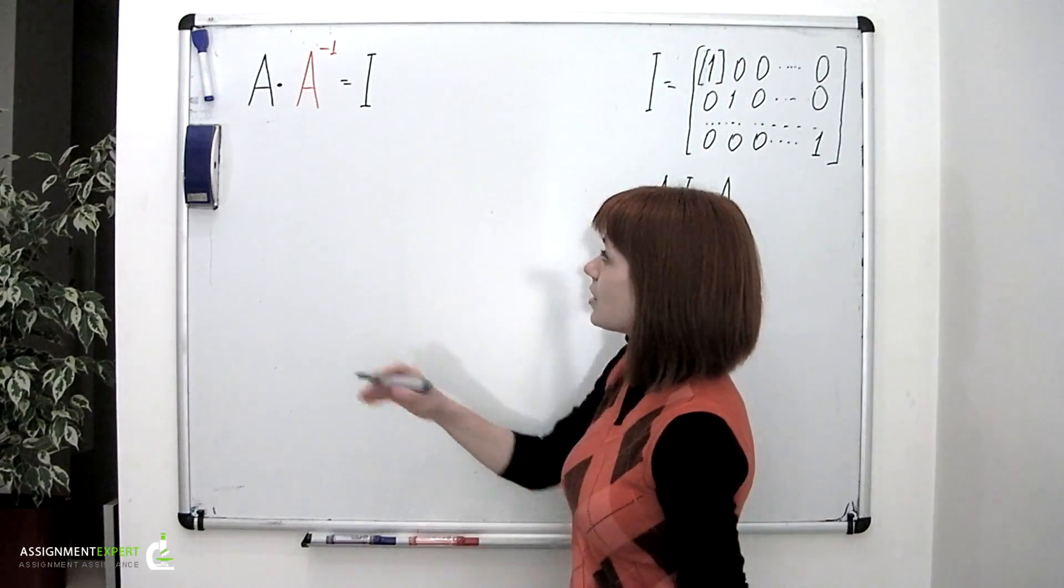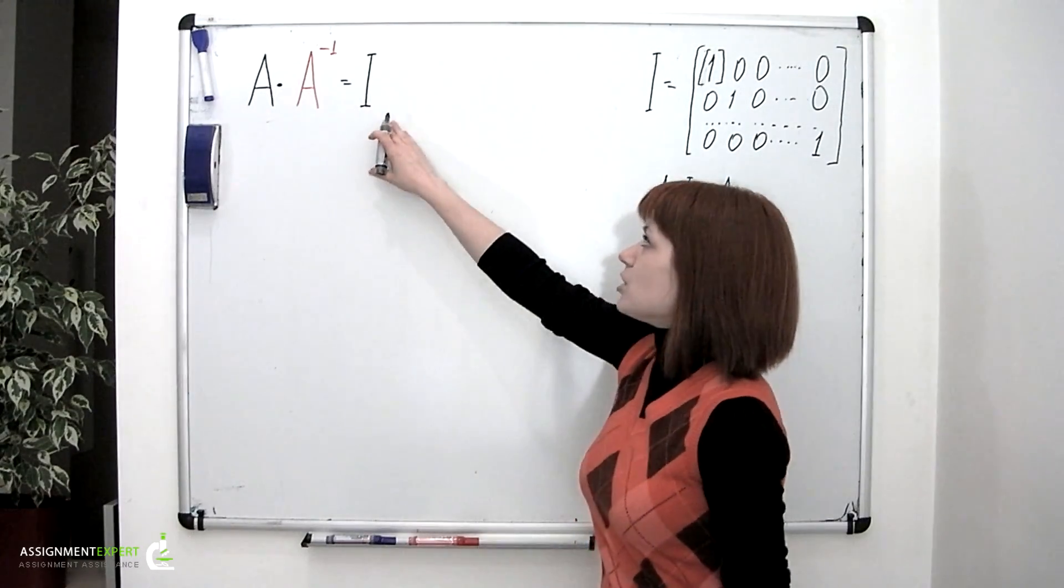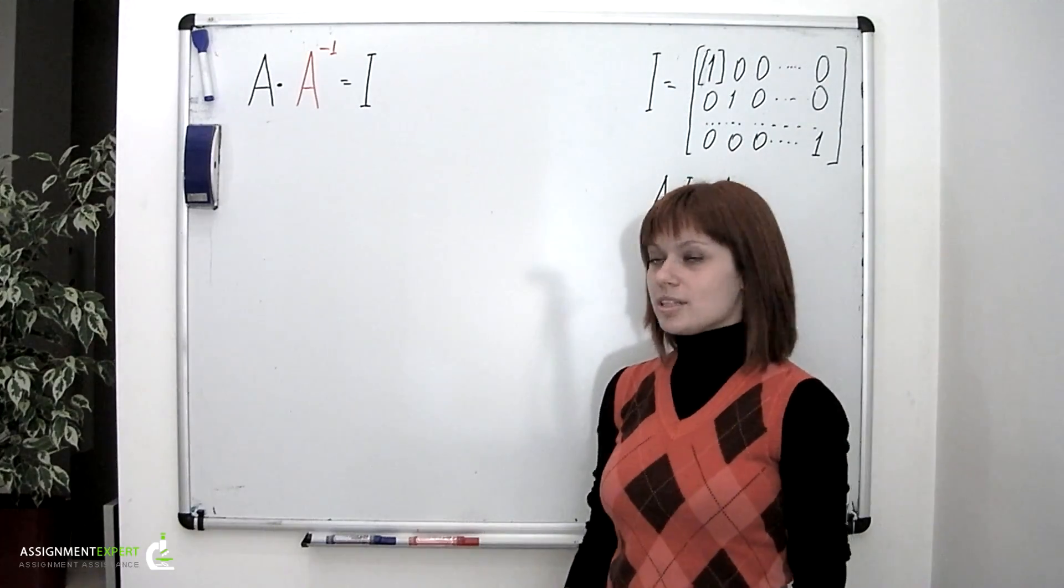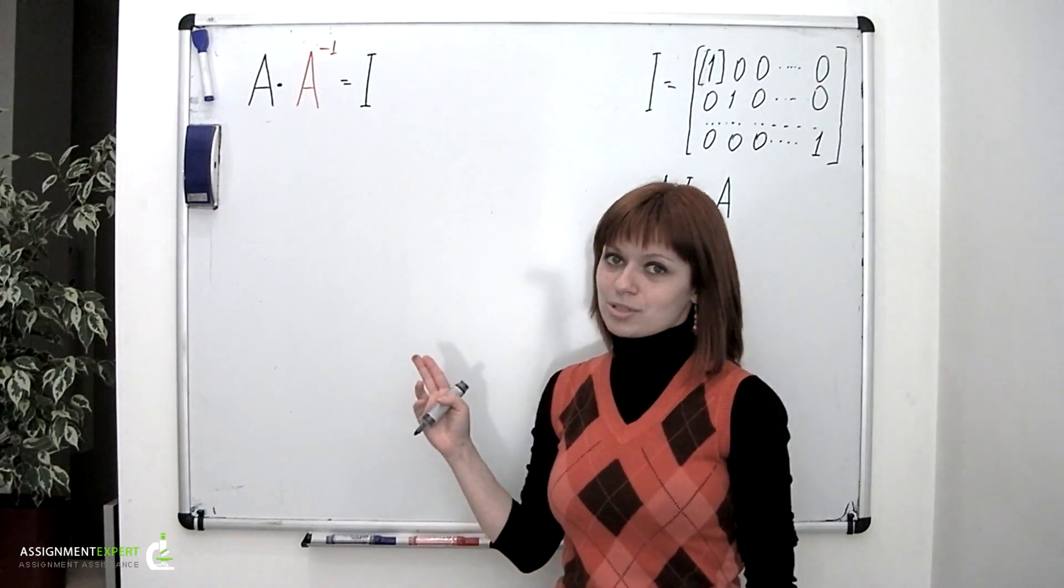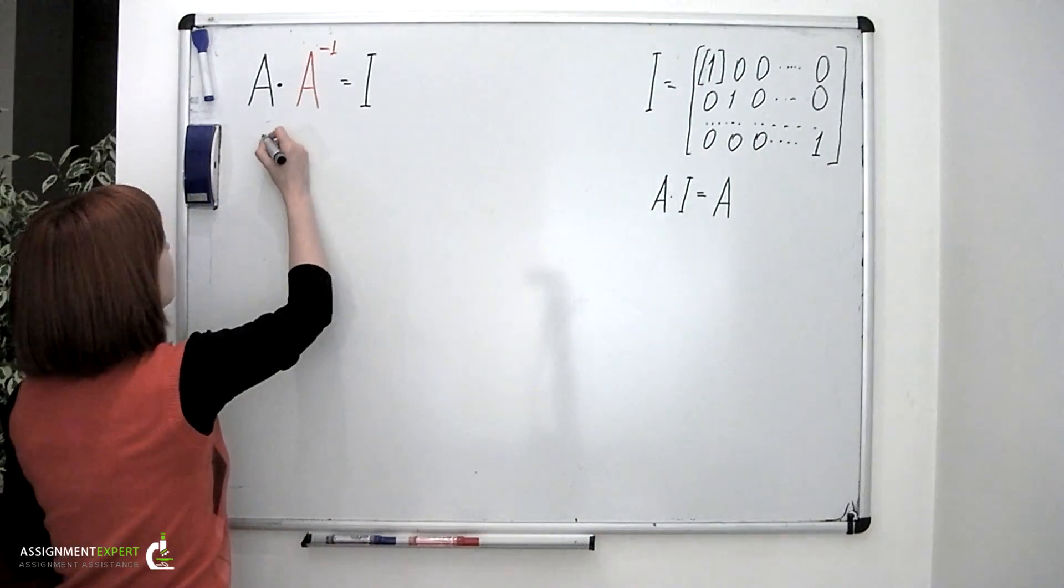So once again, an inverse matrix is a matrix which multiplied by the initial one gives you an identity matrix of the same size. An important thing to remember is that inverse matrices only exist for square matrices. So let's consider the square matrix of the size n by n.